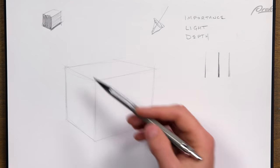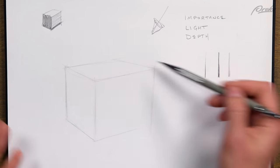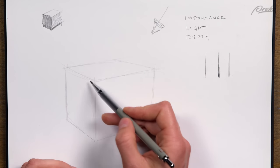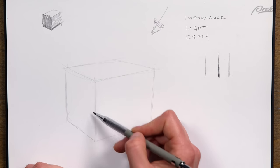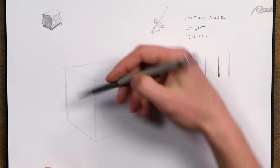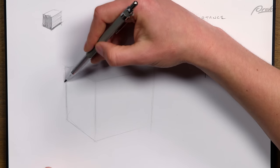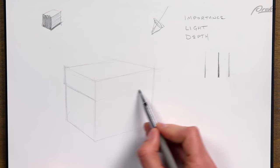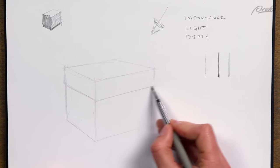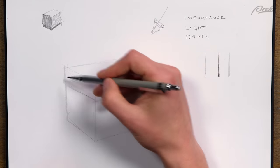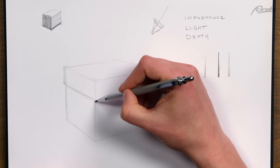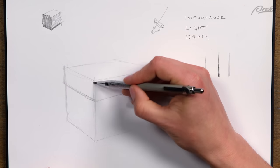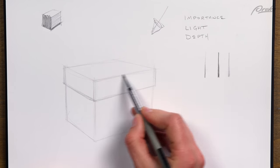And then for importance, it's gonna be outside important, inside less important but I'm gonna have to balance that with the fact that the inside stuff is actually closer to me. So that balance is gonna be interesting. And actually, let's put a lid on this box as well just so we have more elements in here to think about for importance and shadows. The lid is a little bit wider. So, there's my box.